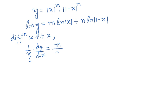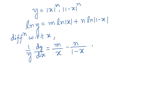The derivative of ln|x| is 1/x, so the right side becomes m/x minus n/(1-x). We have already gotten rid of the modulus part by using the property that d/dx of ln|x| = 1/x.